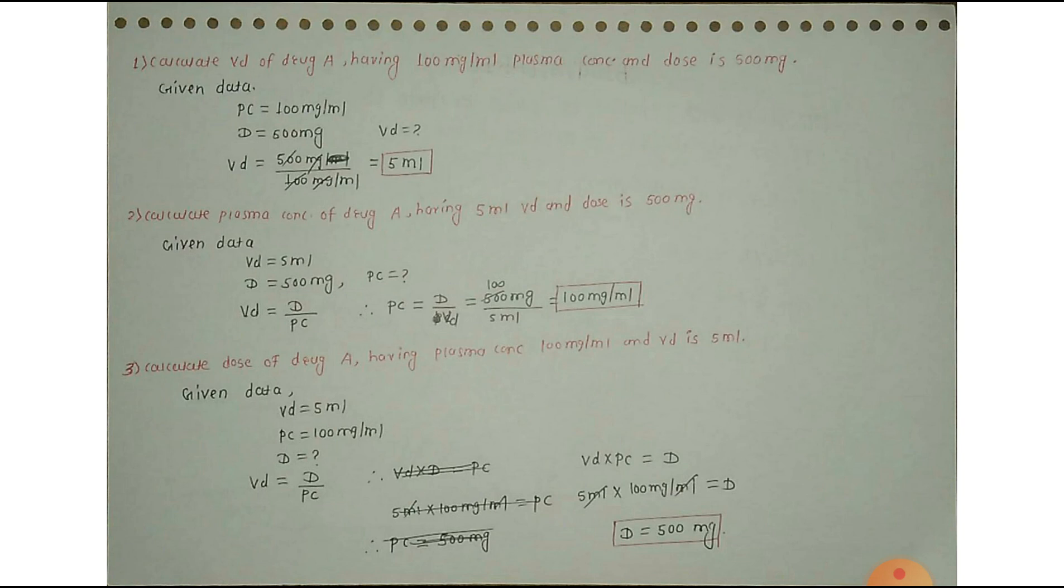First problem is calculate Volume of Distribution of drug A having 100mg per ml plasma concentration and dose is 500mg.